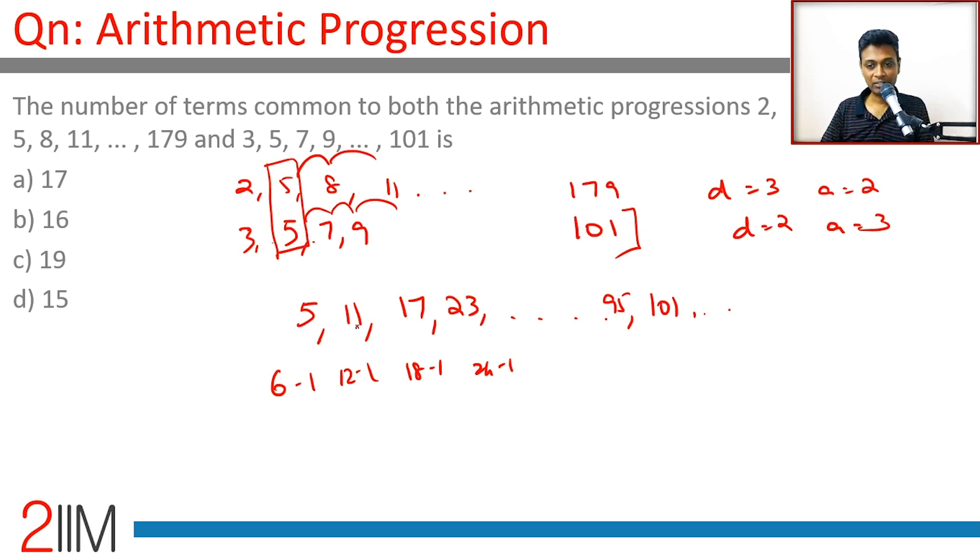Looking at all numbers from 5 to 101 in this sequence: this is 6 minus 1, 12 minus 1, 18 minus 1, up to 102 minus 1. 102 is 6 into 17 minus 1. Starting from 6 into 1 minus 1, going to 6 into 2 minus 1, 6 into 3 minus 1, all the way till 6 into 17 minus 1, there are 17 terms in this sequence. This is the intersection of these two sequences.